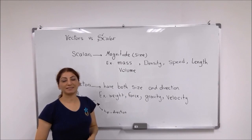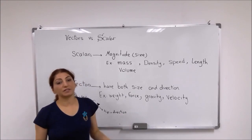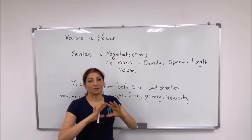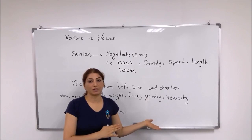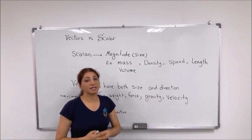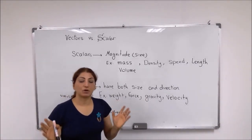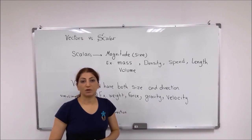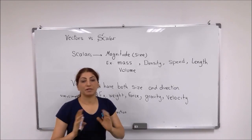We have scalars and vector quantities — those quantities that are actually placed into two categories. One of them are scalars and one of them are vectors. Scalars means they have only size or magnitude. The size or magnitude of these quantities is very important for us, but the direction — for example, which point they are going to — is not very important.